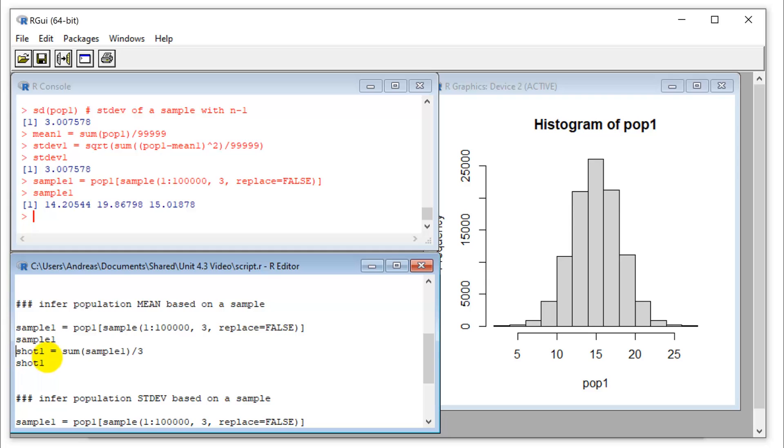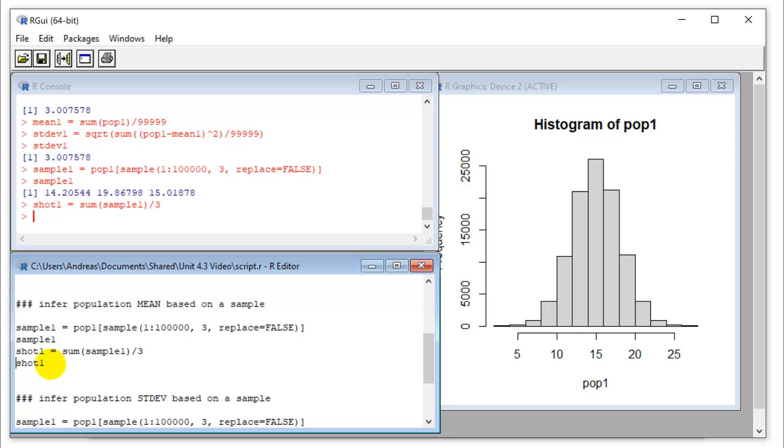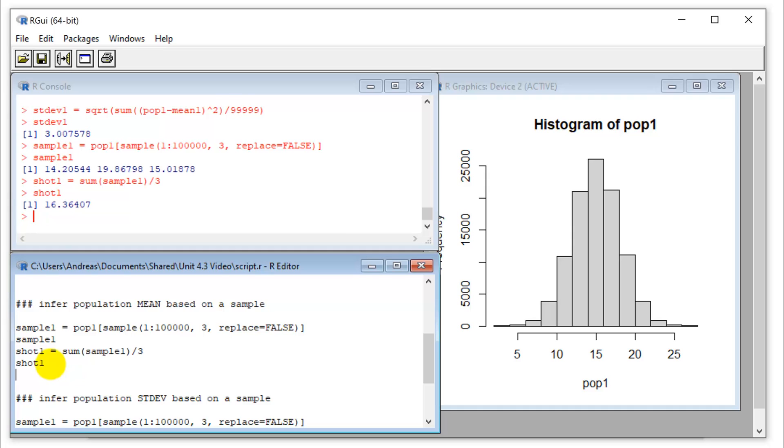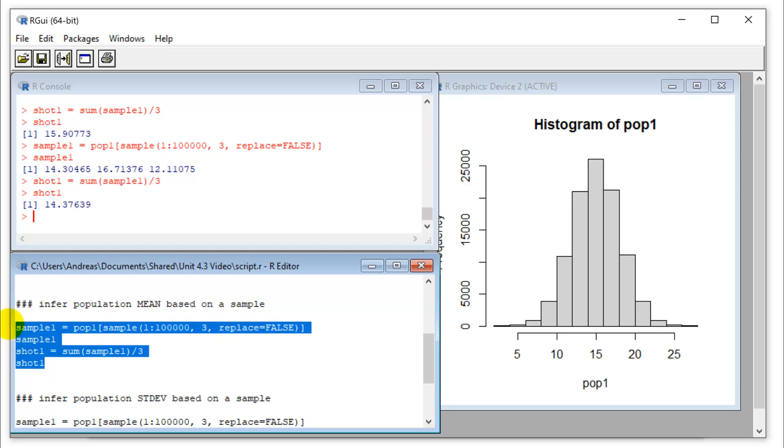And I'm going to take a real small sample because that is where the effect is most pronounced. So I'm going to take my sample number one here. And the syntax of this sampling procedure is a sample out of my population one, out of all the elements that I have here, I want three. And I want to have the replacement being false. So I don't want to sample the same tree twice. So if I take a sample, I take three different trees. Let's run this. And if I look at my sample, I got three numbers.